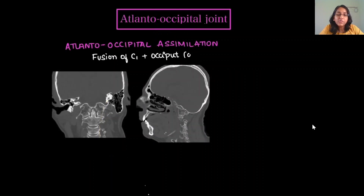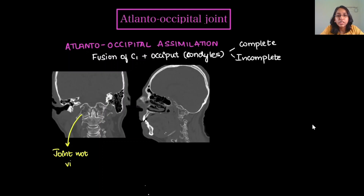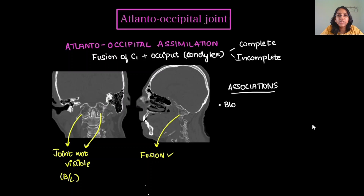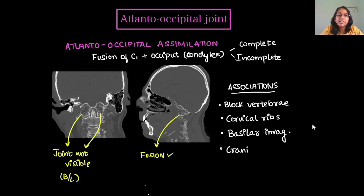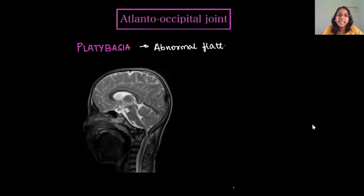Atlantooccipital assimilation involves fusion of C1 with the occipital condyles, either complete or incomplete fusion. The atlantooccipital joint space is not visualized bilaterally, and fusion can be confirmed on sagittal sections. Associations include block vertebrae — look for these along the whole spine — cervical ribs, basilar invagination, and other craniovertebral junction instability.